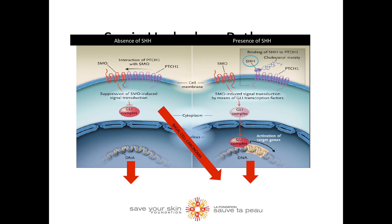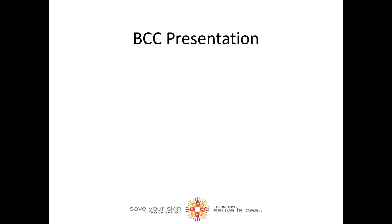Now that we know what happens at the molecular level, let's look at what BCC looks like on the skin. In approximately 80% of cases, BCC arises in the head and neck region, whereas 15% occur on the trunk, arms and legs, although it has been reported in other regions as well. We are going to look at two types of BCC: nodular BCC and superficial.